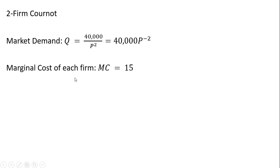We're going to assume that the marginal cost of each firm is $15, constant at $15. And we're going to set marginal revenue equal to marginal cost in order to maximize profit.